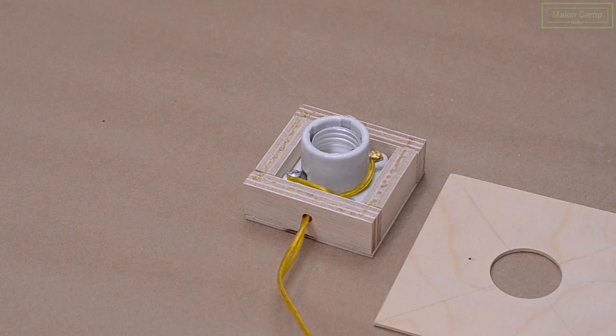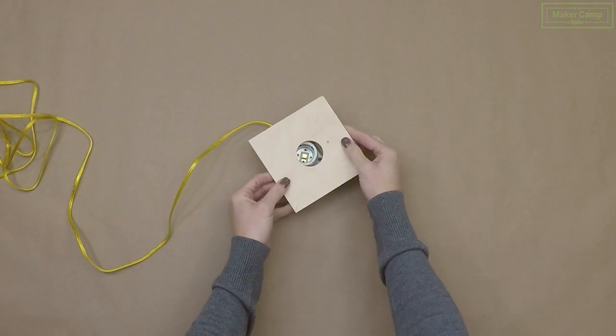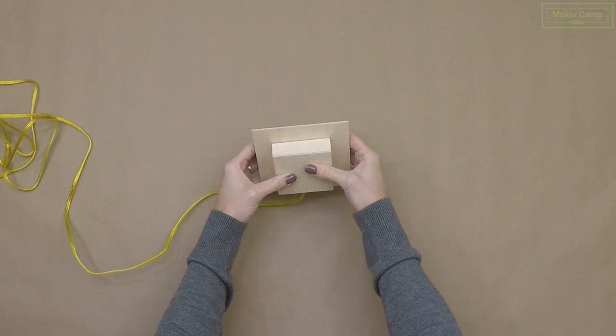After you put your glue on and before it dries, make sure you flip it over so that your 5 by 5 piece is perfectly squared with the base of your lamp.